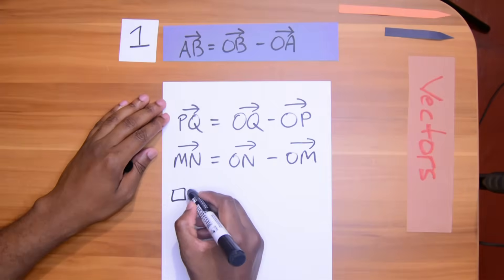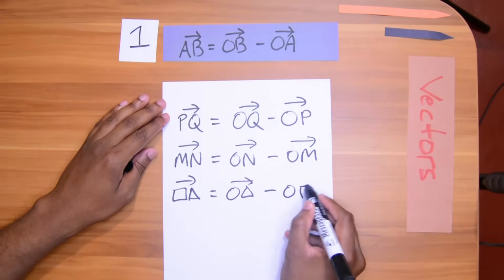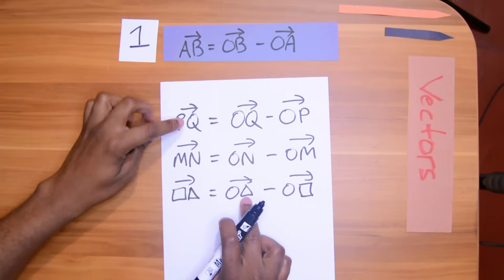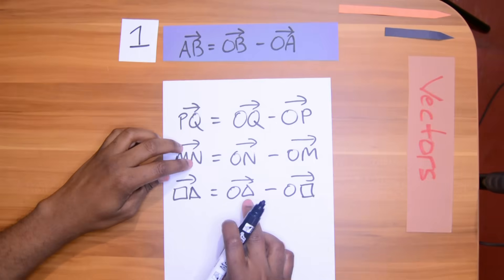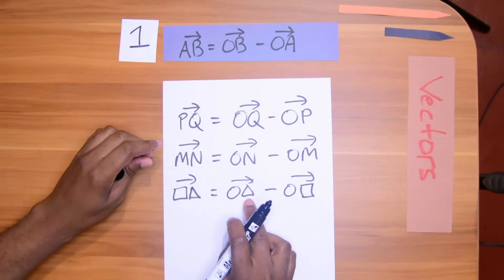It could come as box triangle, which will be O triangle take away O box. So in other words, you always start off with the second letter, second term, take away the first term. So the second position vector take away the first position vector. All right, enough on that.